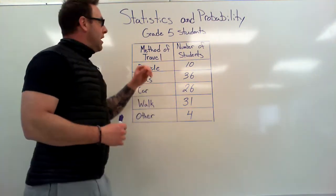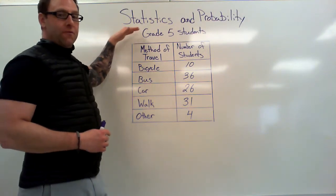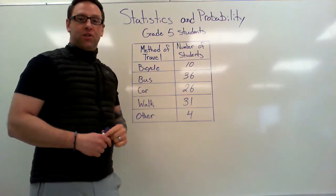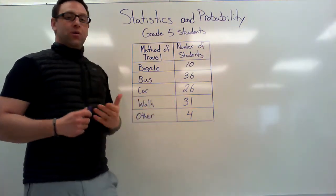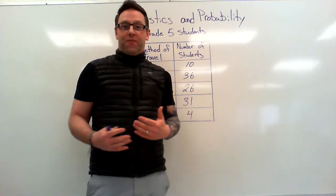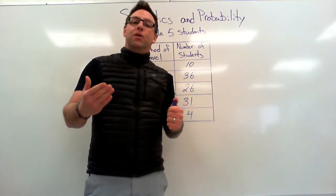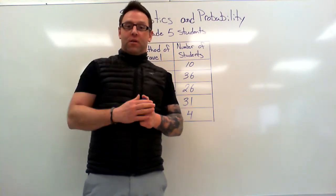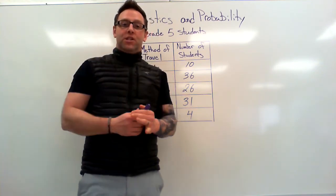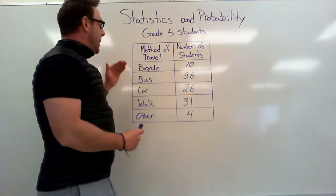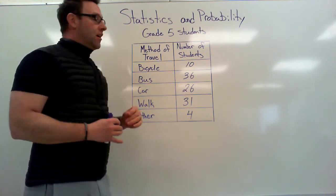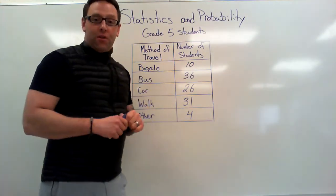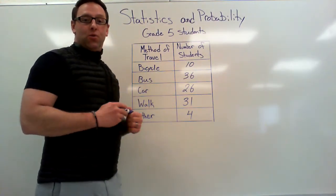I have my data table labeled 'Grade 5 Students.' I've got the method of travel and the number of students. What this would have looked like is I would have gone around to the grade 5 students, class by class, and asked how do you get to school, tallying up the results. Now I've got the information organized in my table. How many people took a bicycle? Well, 10 of the grade 5 students I surveyed rode a bicycle to school.